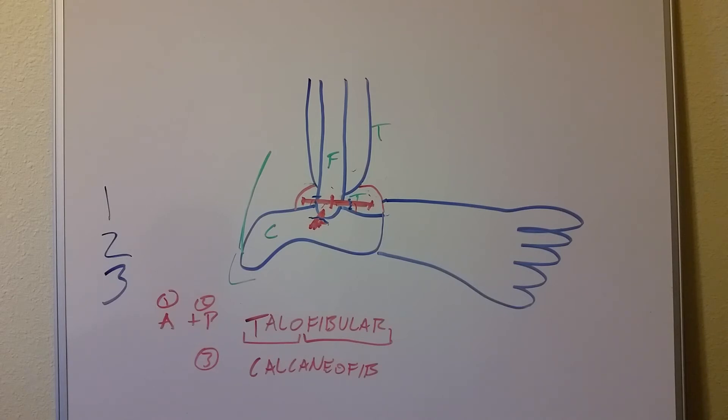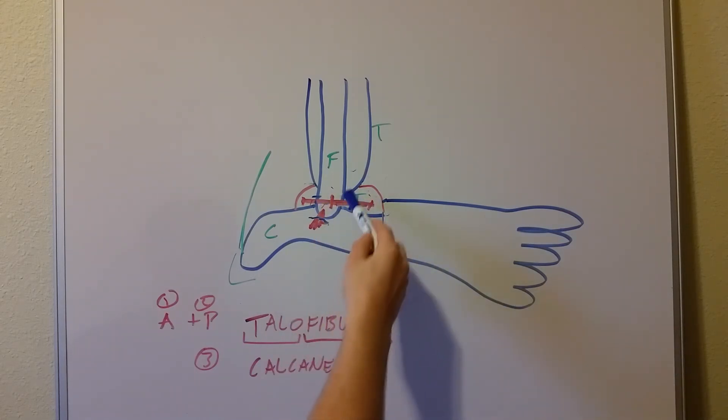It is possible, but for board examinations, it's never going to happen that you'd only injure the posterior talofibular ligament. For board examinations, they're kind of a dumbed-down or not necessarily realistic. If you have a grade one, it can only be the anterior talofibular. So just think you're working around the outside of the foot. You're working from back to front.